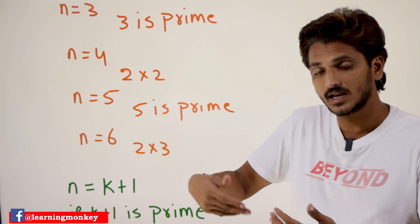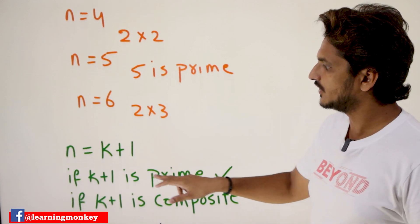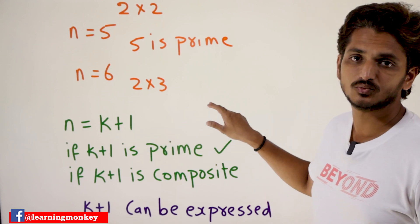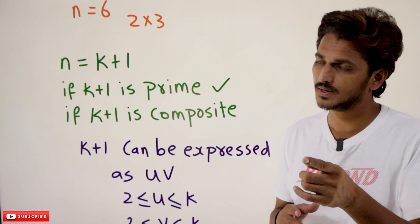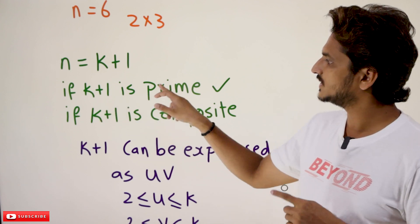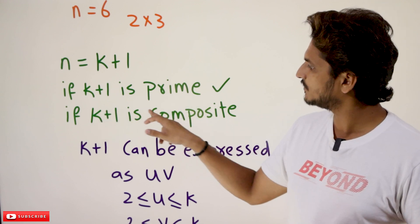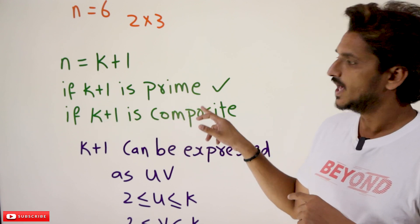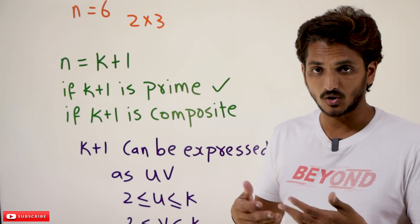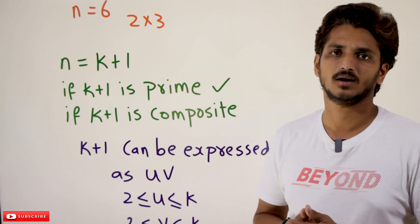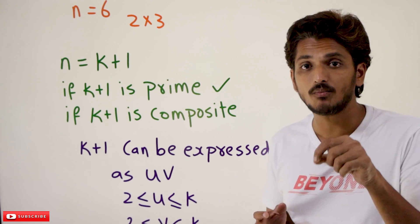n = 7, n = 8, n = 9 — and so on up to n = k+1. If n = k+1, it can be one of two cases: it may be a prime number, or it may be a composite number. If k+1 is a prime number, there is no need to express it further, because it is already a prime number.